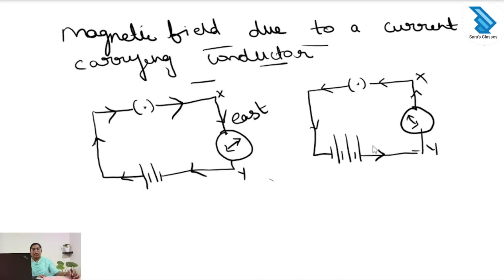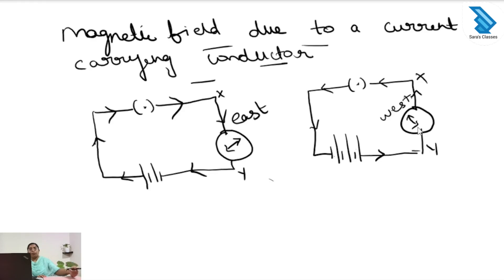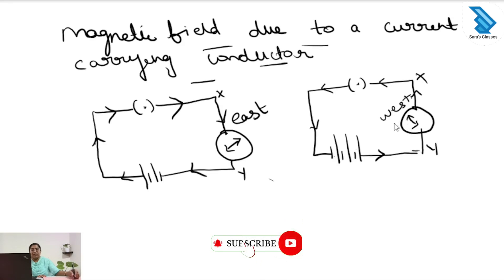Next, we reverse the current by connecting the negative terminal where the positive was and vice versa. Now the direction of the current is in the upward direction. When we reverse the current, the compass needle also shows a deflection in the opposite direction — that is, in the west direction. So reversing the current reverses the direction of deflection of the compass needle.